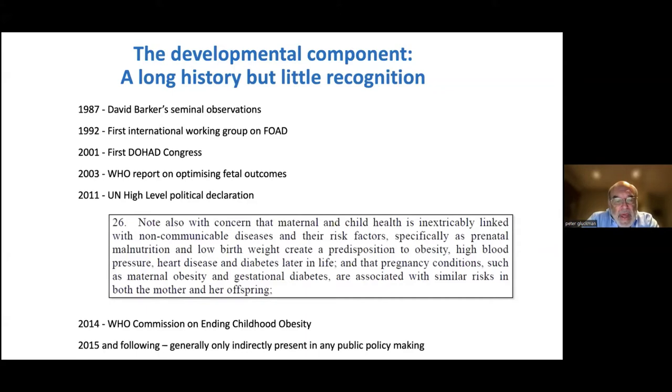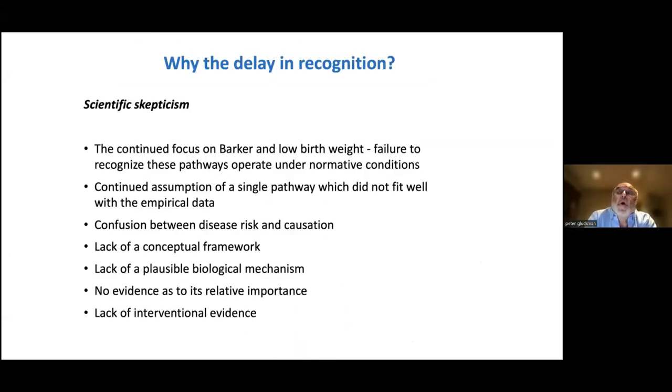First of all, there's been an unfortunate habit in our community to think it's all about the Barker hypothesis, namely the relationship between low birth weight and the risks of type 2 diabetes, when in fact, birth weight is actually largely not core to the story, and as I showed you with the U-shaped curves, it's clearly obvious that there's more than one pathway involved. There's been a confusion between disease risk and causation. What happens in early life doesn't cause disease, but it appears to change the risk of getting disease later in life. For much of that time, there hasn't been an agreement on a conceptual framework, and a lack of plausible biological mechanism, and no real evidence as to its relative importance compared to trying to alter lifestyle in adults. And the lack of compelling interventional evidence remains the core issue of the day.